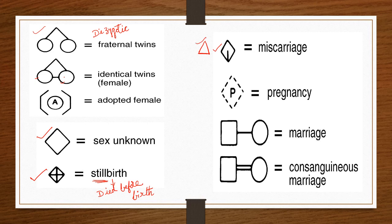To represent a pregnant lady, a specific symbol is used. In some books it is mentioned with a dotted line or clear lines inside the circle.